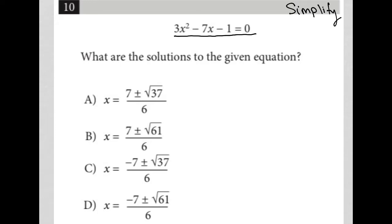I take a peek down at the answer choices and see that all of these are in this format: x equals negative B plus or minus the square root of B squared minus 4AC all over 2A, otherwise known as the quadratic formula or quadratic equation.